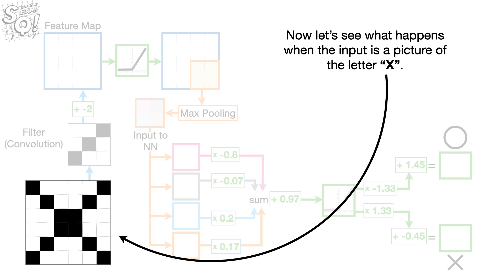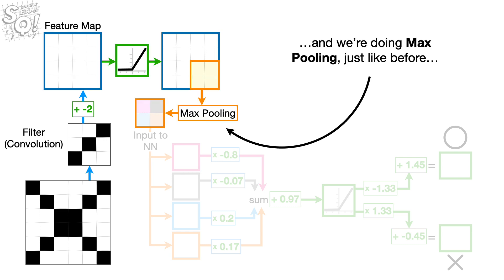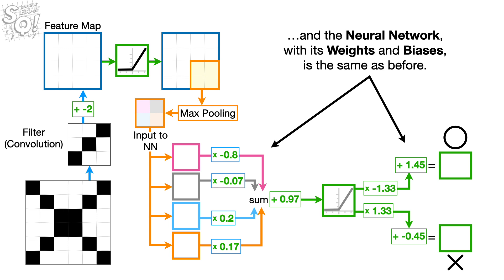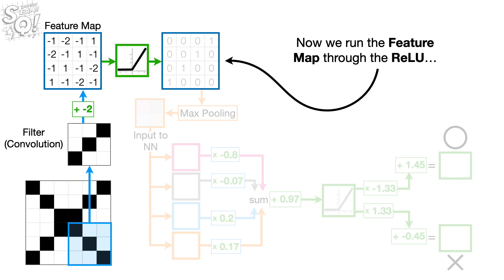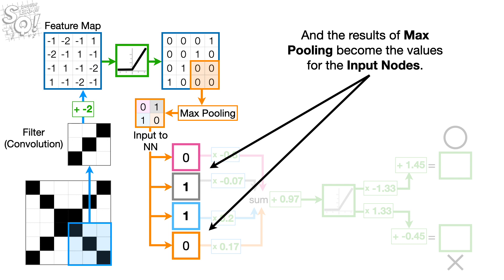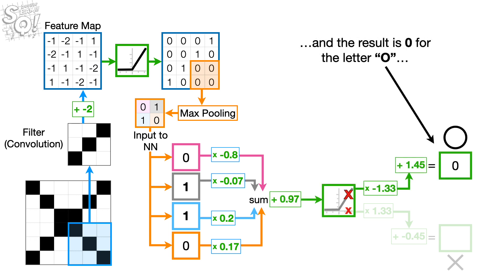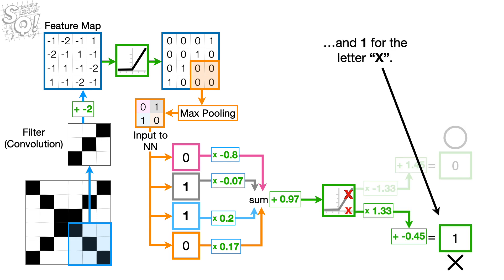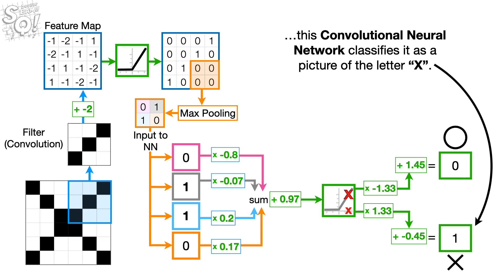Now let's see what happens when the input is a picture of the letter X. Note, even though we have changed the input, the filter is the same as before, and we're doing max pooling just like before, and the neural network with its weights and biases is the same as before. Just like before, we run the filter over the input to create the feature map, then we run the feature map through the ReLU and do max pooling. The results of max pooling become the values for the input nodes. We run the values through the neural network and the result is 0 for the letter O and 1 for the letter X. So when the input is a picture of the letter X, this convolutional neural network classifies it as the letter X.